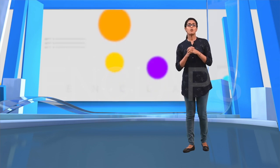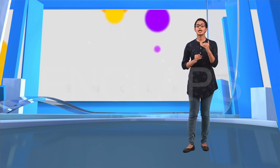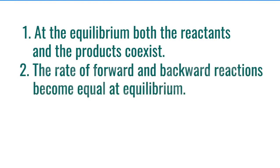Now, let us see what are the characteristics of chemical equilibrium. At equilibrium, both reactants and products coexist. The rate of forward and backward reactions become equal at equilibrium.